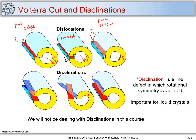Similarly, there is another type of Disclination I can create. I shift the top part along this way and the bottom part will be at this location — the defect generated is a Disclination. I have taken out some part and when I try to join it in, that also gives me a Disclination. However, we are not going to deal with Disclination in this course, but this defect becomes very important when you try to understand liquid crystals — these are defects seen in liquid crystals.